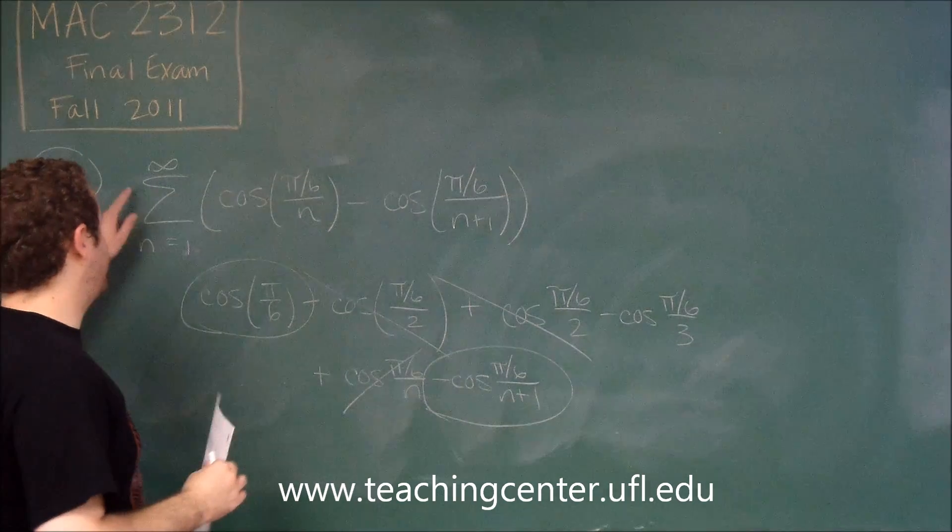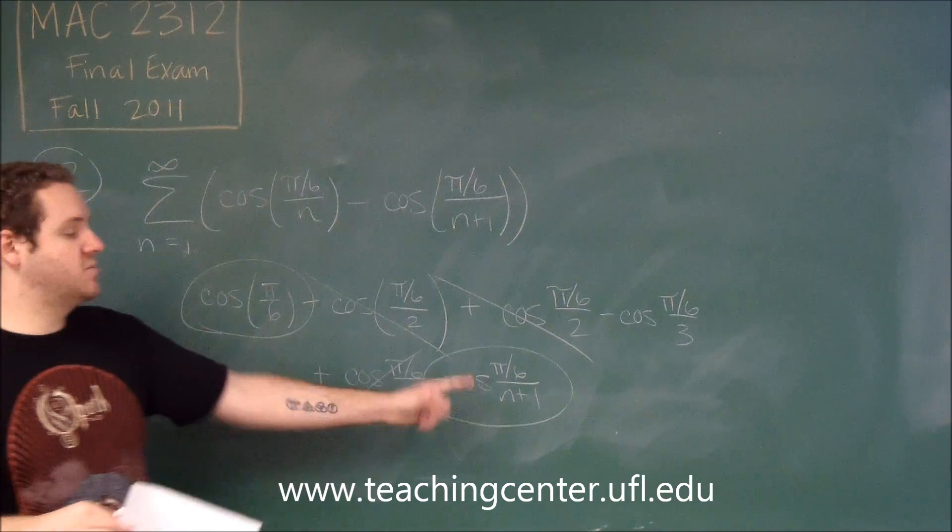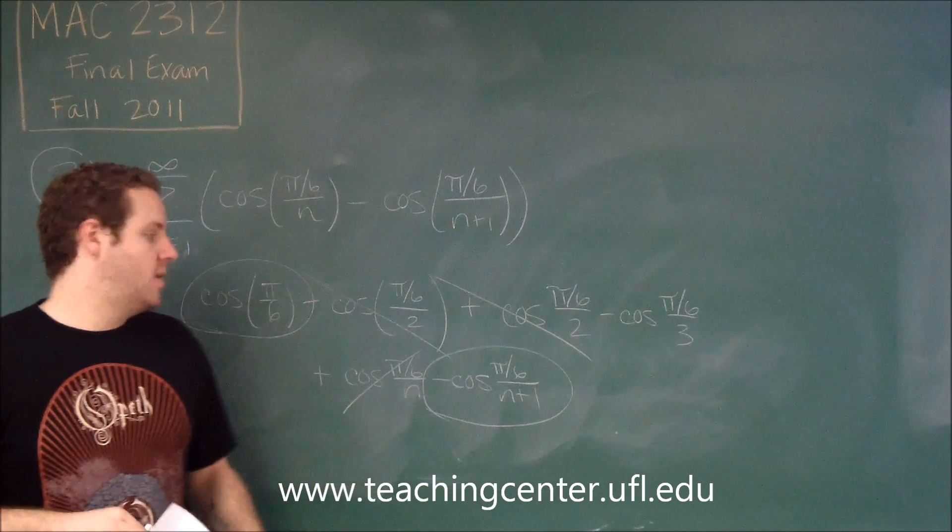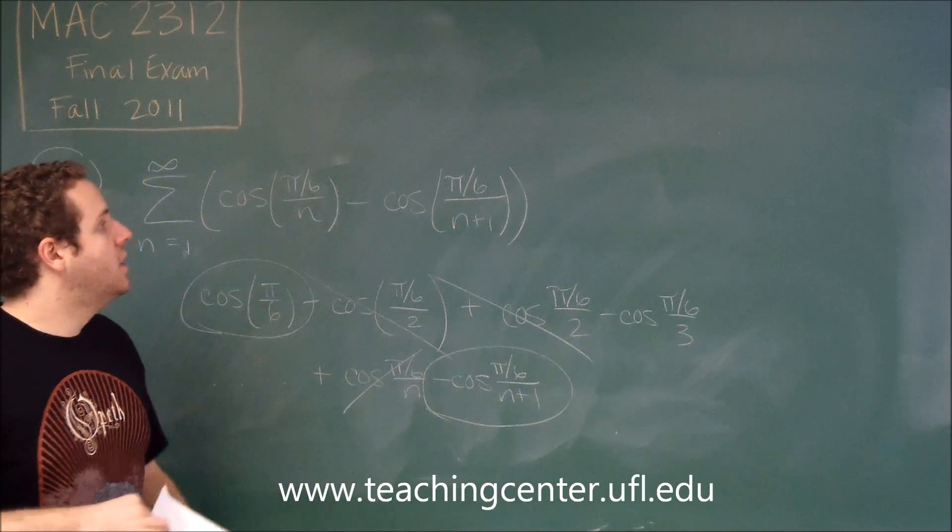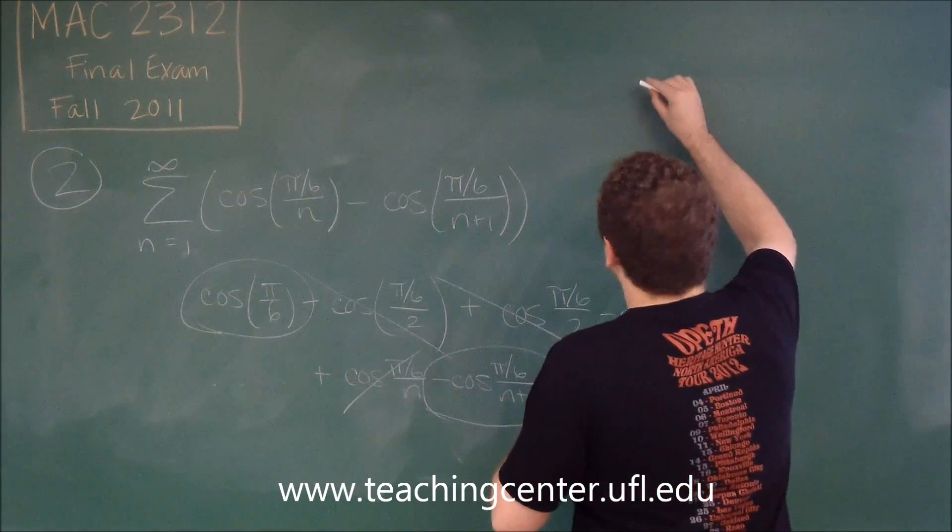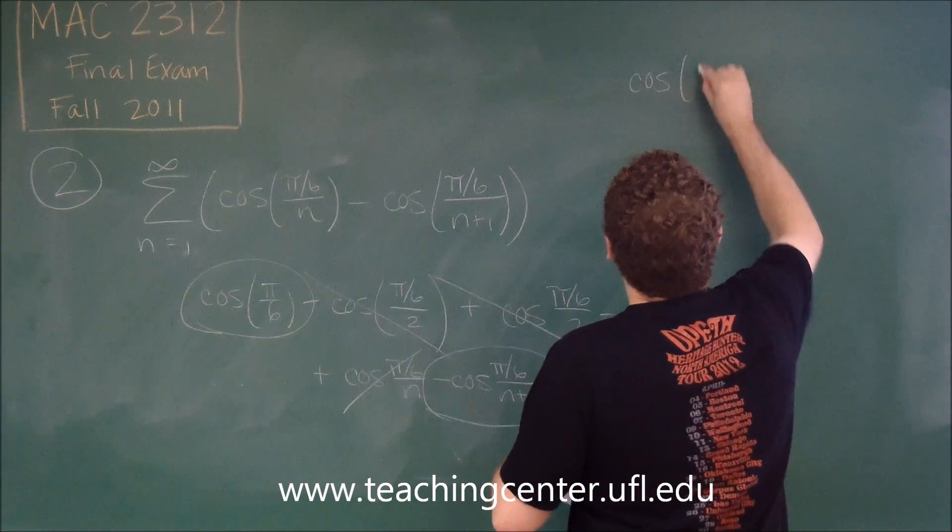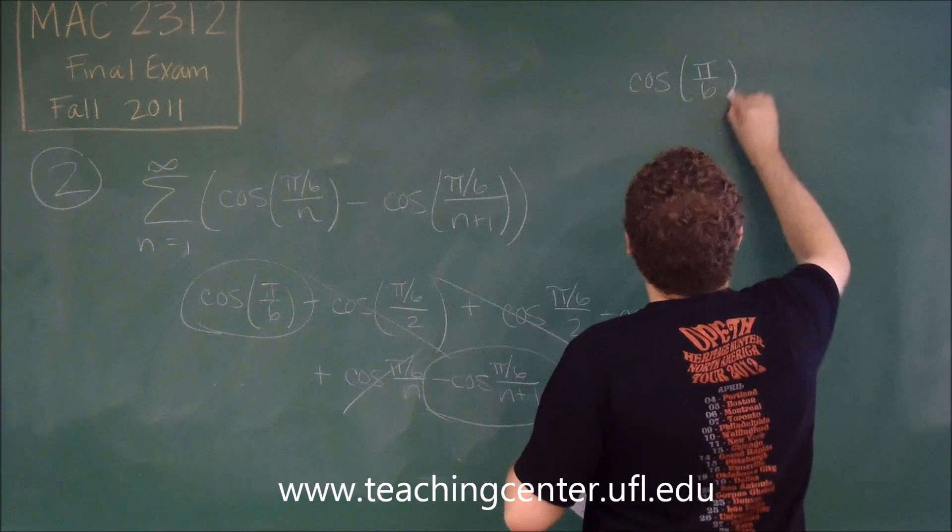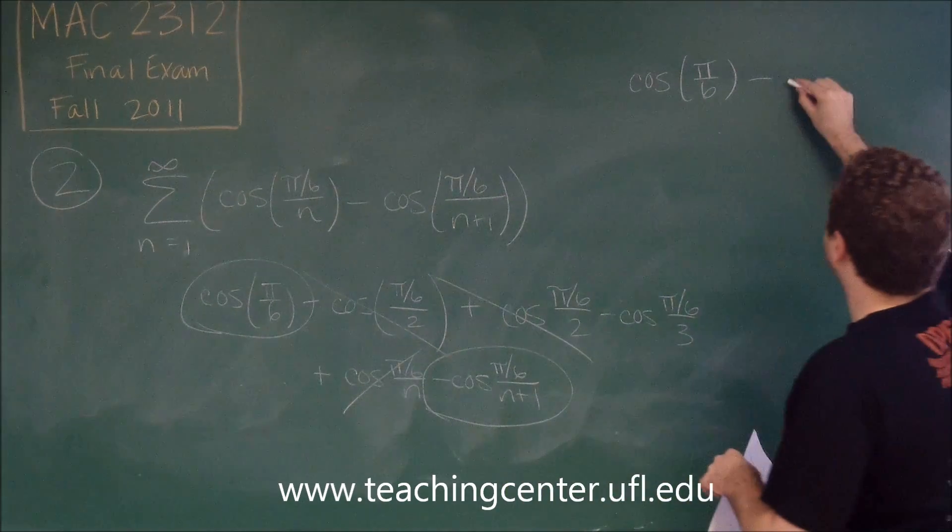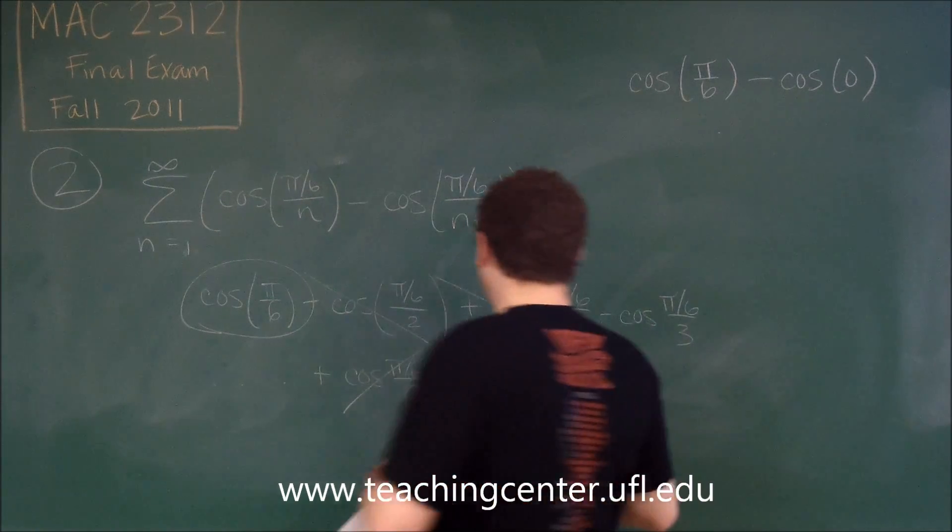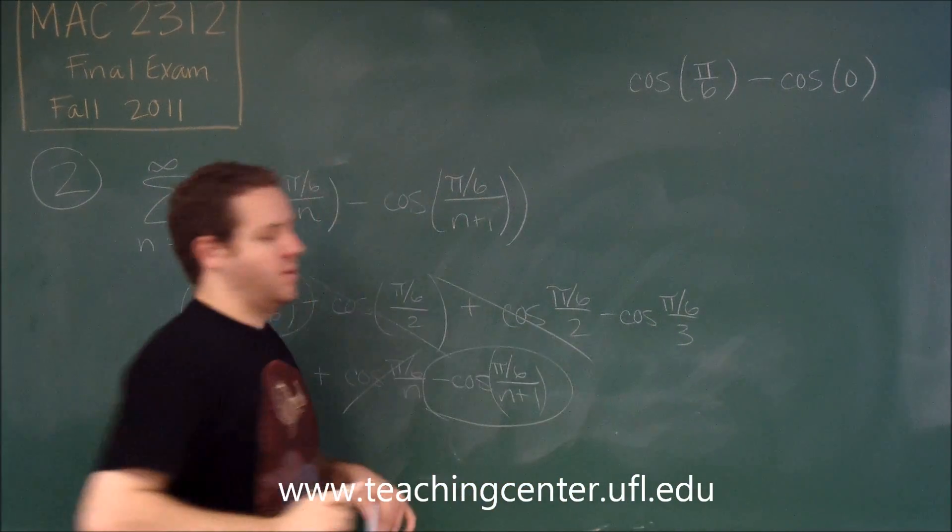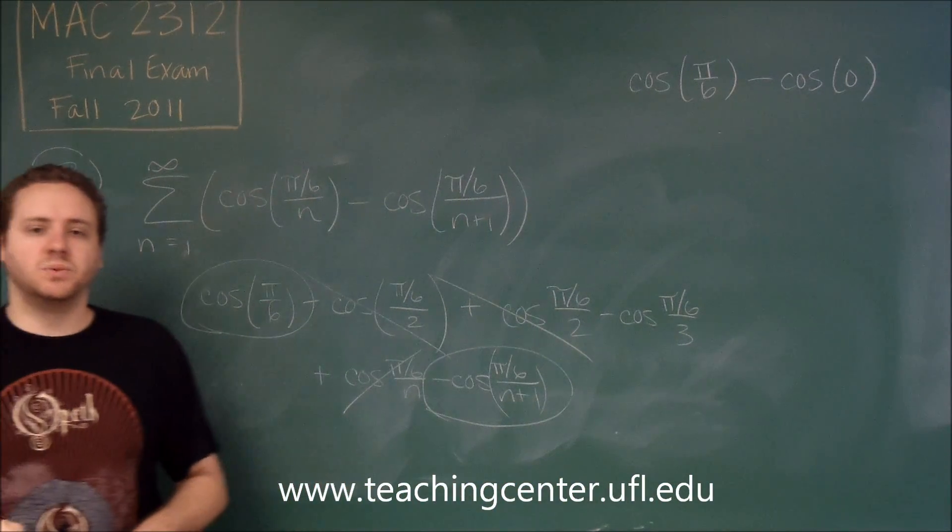So since this is an infinite series, this last term is when n is going to infinity. When n is going to infinity, we get pi over 6 over infinity, which is 0. So our full term becomes cosine pi over 6 minus cosine of 0, because this whole part in there would become 0 as n goes to infinity.